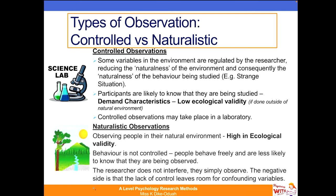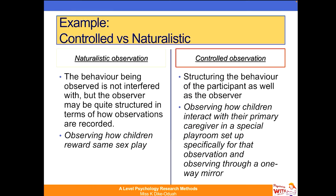Naturalistic observations take place in the participants' realistic environment. I can recall Schaffer and Emerson's study in attachment, where they got mothers to keep diaries of their babies' responses to separation anxiety, which took place in their own homes. In this type of observation, behaviour is not controlled — people behave freely, they are less likely to know they are being observed, and the researcher doesn't interfere; they simply observe what is going on.